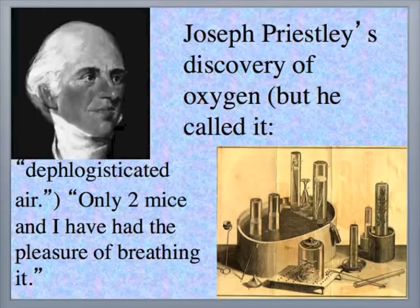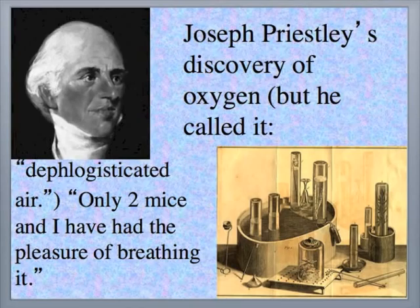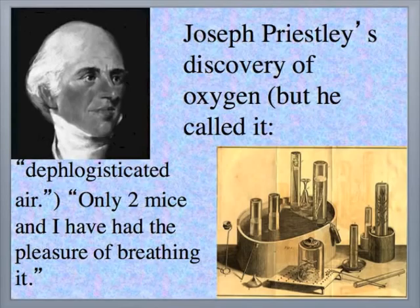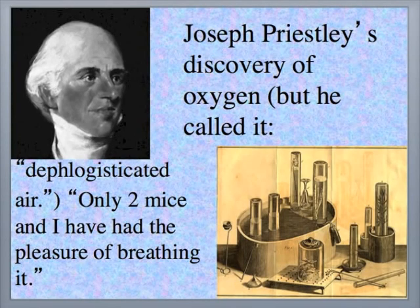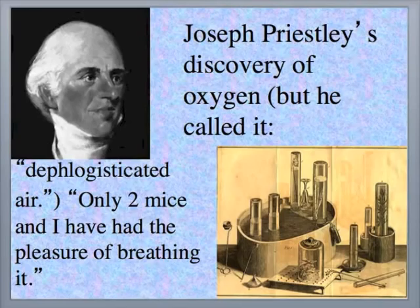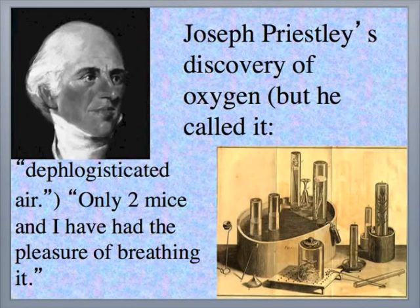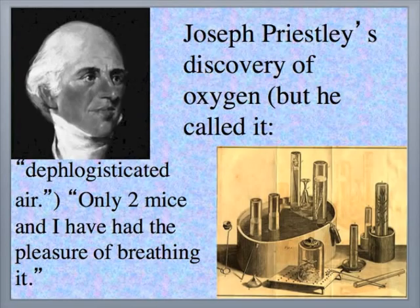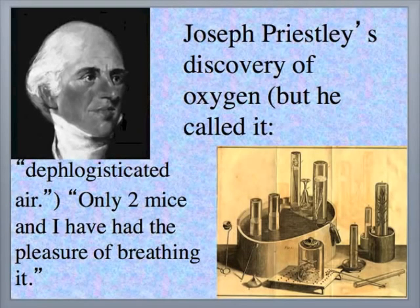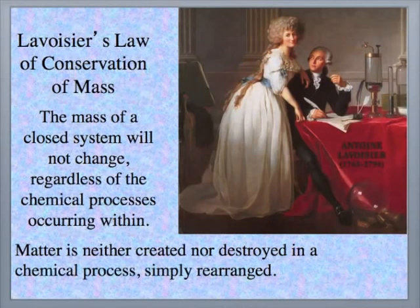Then, Joseph Priestley discovered oxygen by heating the oxide of mercury and collecting the gas that was released. He saw how this gas supported combustion when glowing splints burst into flame when inserted into it. He put mice in a chamber of this gas and saw how frisky it made them. He said, only two mice and I have had the pleasure of breathing it. Priestley didn't know he had discovered oxygen. He thought he had found dephlogisticated air, a gas so hungry for phlogiston that it eagerly sucked it out of whatever was burning.